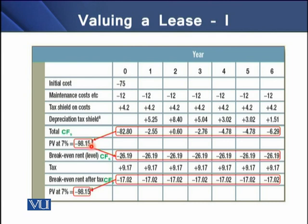Now we need to determine an equal amount of cash flows under an annuity scheme so that we can break even this $98,150. We determine a break-even level at an annuity of $26,190. We know that the lessee is allowed to have a tax shield on its lease payments, so at a 5% tax bracket we have this tax shield.